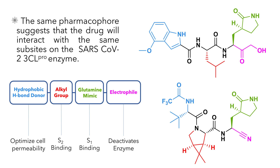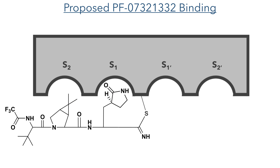The features of this pharmacophore are: a hydrophobic cap with a hydrogen bond donor, which was used to optimise cell permeability; a hydrophobic alkyl chain, which is used to bind to the S2 pocket; a glutamine mimic — in both cases an identical lactam ring — which binds to the S1 subsite; and an electrophile which reacts with the cysteine residue and deactivates the enzyme. With this structural analysis, we can propose a similar manner of binding, with the lactam occupying the S1 subsite, the cyclopropyl group occupying the S2 subsite, and the nitrile group reacting with the nucleophilic cysteine residue to form a covalent bond.